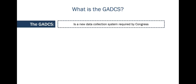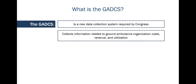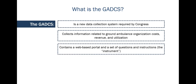For our first overview slide: what is the GADCS? The GADCS is a new data collection system required by Congress. Congress required CMS to collect information related to ground ambulance organization costs, revenue, and utilization, and to collect that information from representative samples of ground ambulance organizations. CMS responded by developing the GADCS, which is both a web-based portal and a set of questions and instructions. We refer to those questions and instructions as the GADCS instrument.